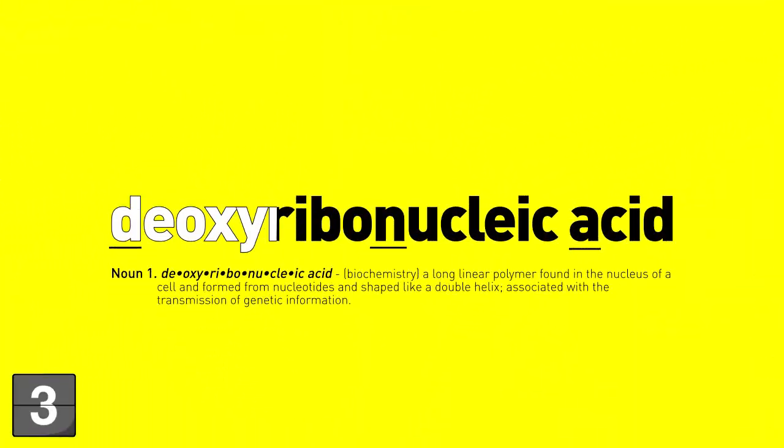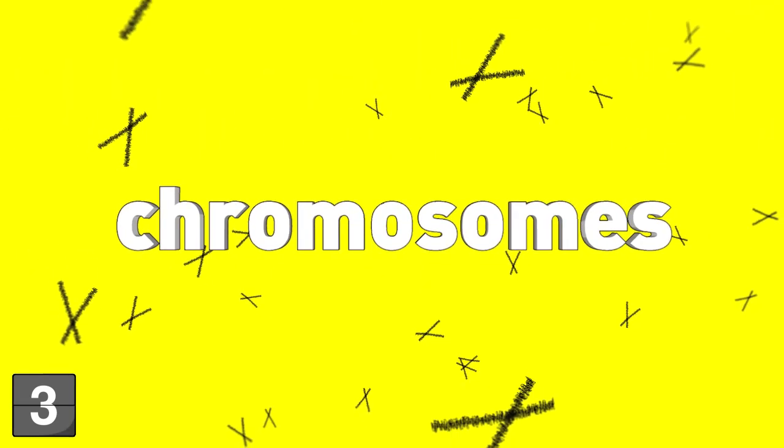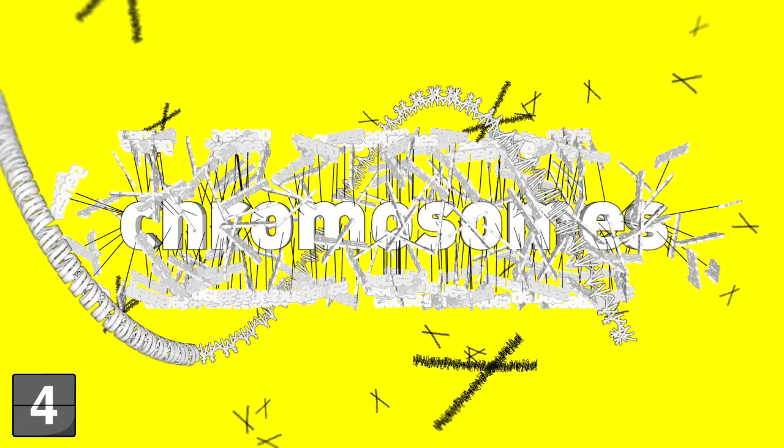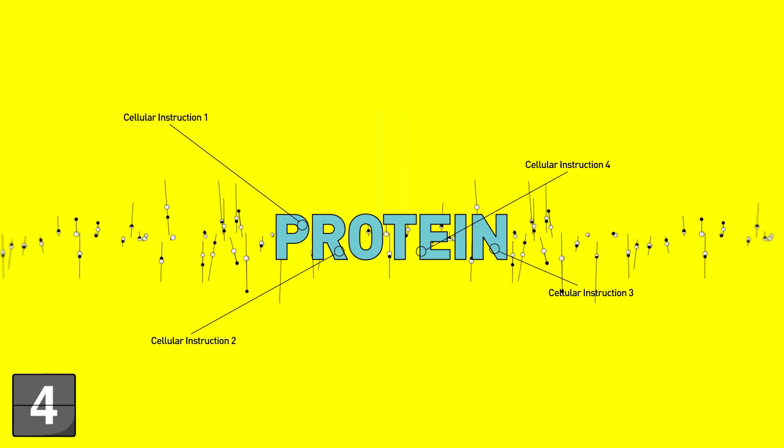DNA stands for deoxyribonucleic acid, and these long strands are called chromosomes. Chromosomes are made up of many genes. One gene is a specific sequence of DNA on a chromosome that provides particular cellular instruction.